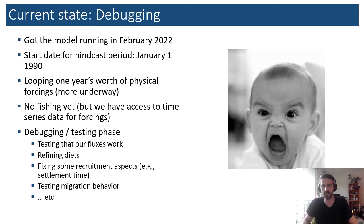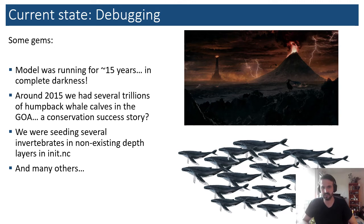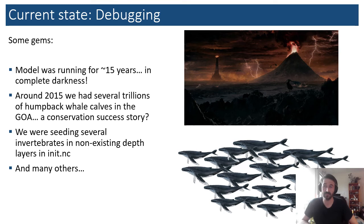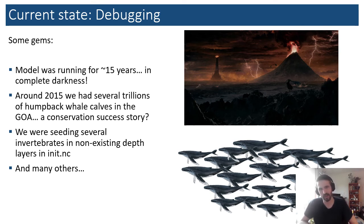We haven't really started the actual tuning of parameters yet. Some funny issues have come up: I was excited that the model ran for about 15 years early on, until I realized there was no light in the model at all. A couple of decades into a simulation, a whole bunch of sperm whales pop up — which is obviously a problem. Other issues include placing invertebrates where they don't belong or in layers that don't exist. These are the kinds of things we're addressing at this stage.